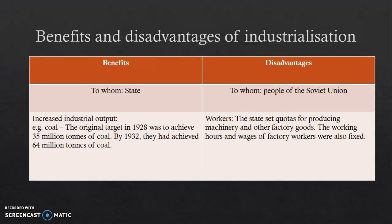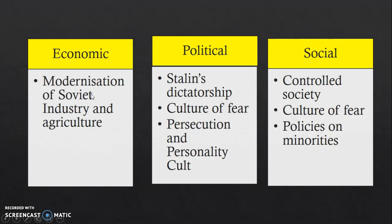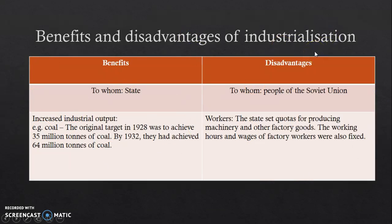What were the benefits and disadvantages of industrialisation? The benefits were mainly for the state. Industrialisation managed to increase industrial output — the original 1928 target for coal was only 35 million tons, but by 1932 they had achieved 64 million tons, which was clearly considered successful. However, the disadvantage was to the people, mostly factory workers. The state set quotas for producing machinery and other factory goods, and the working hours and wages of factory workers were also fixed, creating very stressful conditions.